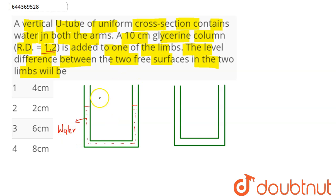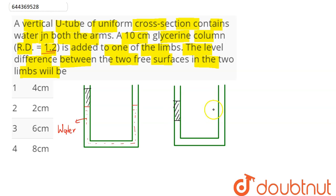We have a U-tube of uniform cross-section initially containing water. Glycerin of 10 centimeter column is added to one side, so this height is given as 10 centimeter. Adding glycerin on one side, we can see the water level increases on the other side. The glycerin height is 10 centimeter.